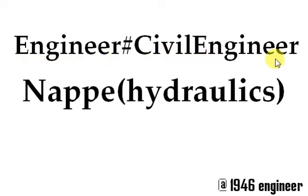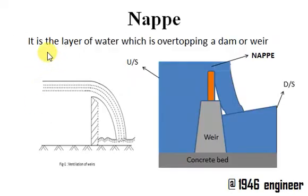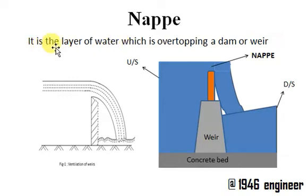Welcome to Engineer Hash, a civil engineering channel. In this video I'm going to talk about nappe in relation with hydraulics — not with geology, please note that. The definition of a nappe is the layer of water which is overtopping a dam or a weir.